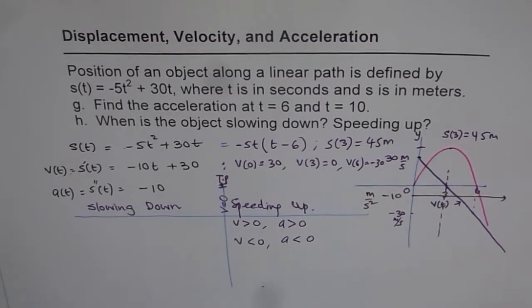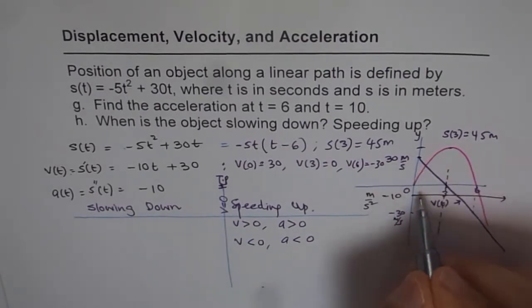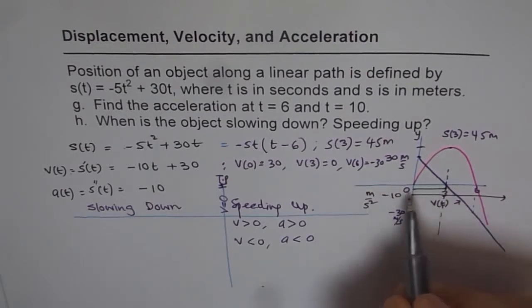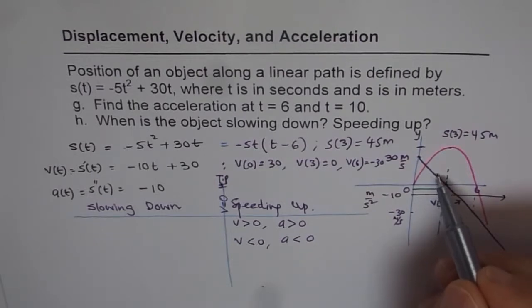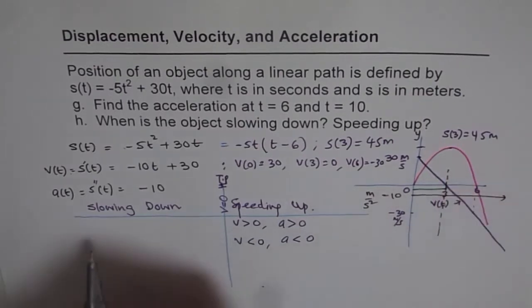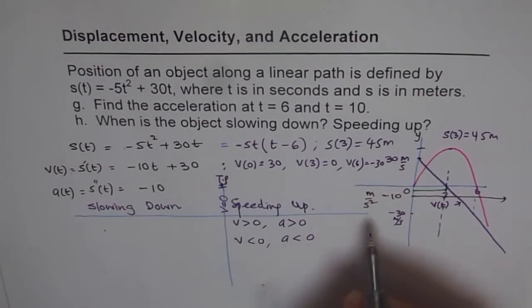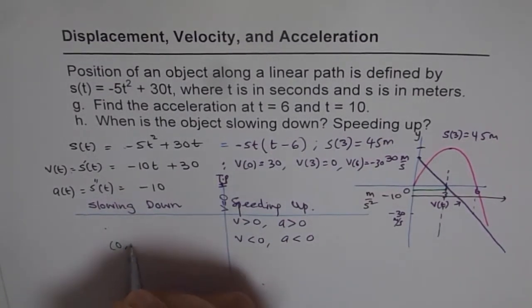Let me draw speeding up with a positive color, green. In region zero to three, this is actually negative acceleration. What's happening here is velocity is positive but acceleration is negative. They're opposite sign. If they're opposite sign, that means we're slowing down. They are opposite sign, so zero to three comes here.